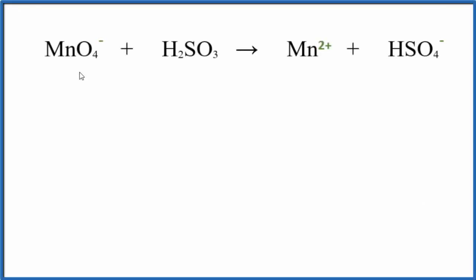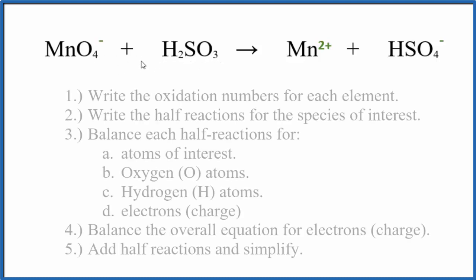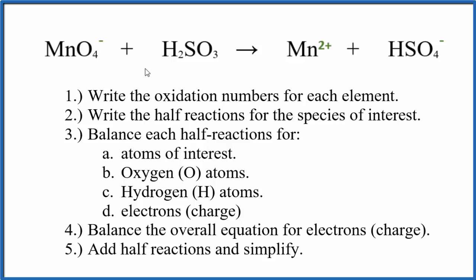In this video we'll write the balanced redox reaction for MnO4 minus plus H2SO3. We use the half reaction method. We're going to assume this is an acidic medium and to do this we're going to follow five basic steps.